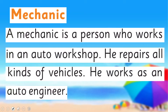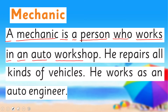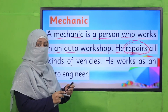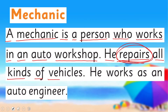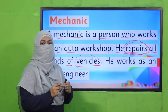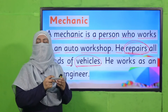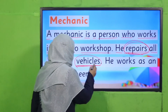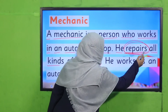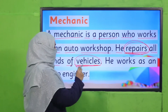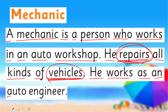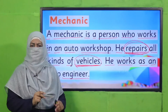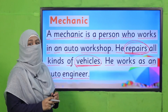Next is 'mechanic'. What does a mechanic do? A mechanic is a person who works in an auto workshop. He repairs vehicles — 'repairs' means to fix something that is not working properly. He fixes all kinds of vehicles: motorcycles, cars, vans, buses — anything you use to move from one place to another. So whenever your vehicle is not working, a mechanic repairs it. He also works as an assistant to an auto engineer.